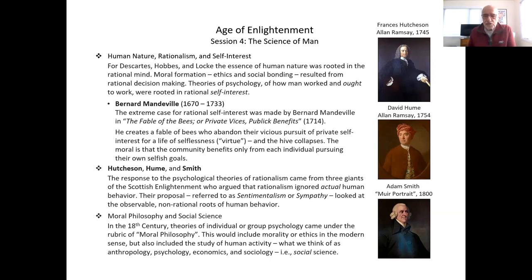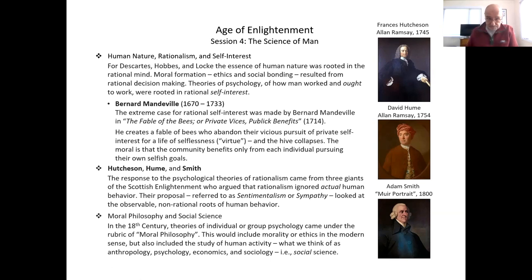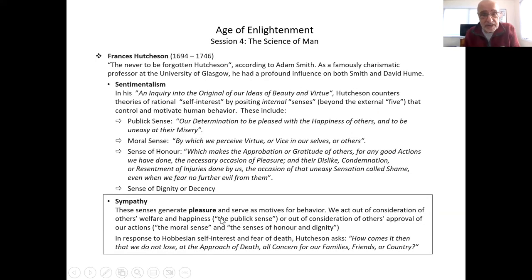In the 18th century, theories of individual or group psychology came under the name of 'moral philosophy,' which included morals and ethics as we think of them but also the study of human activity — what we now think of as anthropology, psychology, and social science. In this group of Scots all doing what they called moral philosophy, Adam Smith's most famous book in the 18th century was not 'The Wealth of Nations' but his book on moral philosophy. The first of this trio, born 1694 — a generation older than Hume — is Francis Hutcheson, the 'never to be forgotten Hutcheson,' as Smith called him, a famously charismatic professor at the University of Glasgow.